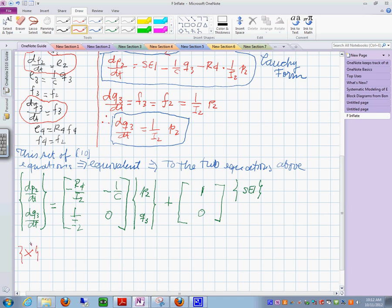X dot is equal to this matrix, which calls it A, times this state vector like this, plus this matrix B, times the vector of inputs, which we call it U. I'm going to give it some names.